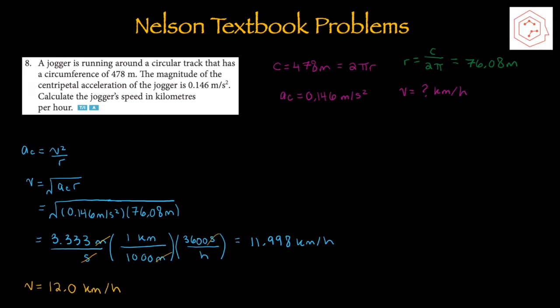For question number eight: a jogger runs around a circular track with a circumference of 478 meters, and the magnitude of centripetal acceleration is 0.146 m/s². We need to calculate the jogger's speed in km/h. Since circumference = 2πr, isolating for radius gives r = 76.08 m. Using ac = v² / r and isolating for v gives v = √(ac · r). Using the factor-label method to convert from m/s to km/h, the final speed of the jogger is 12 km/h.